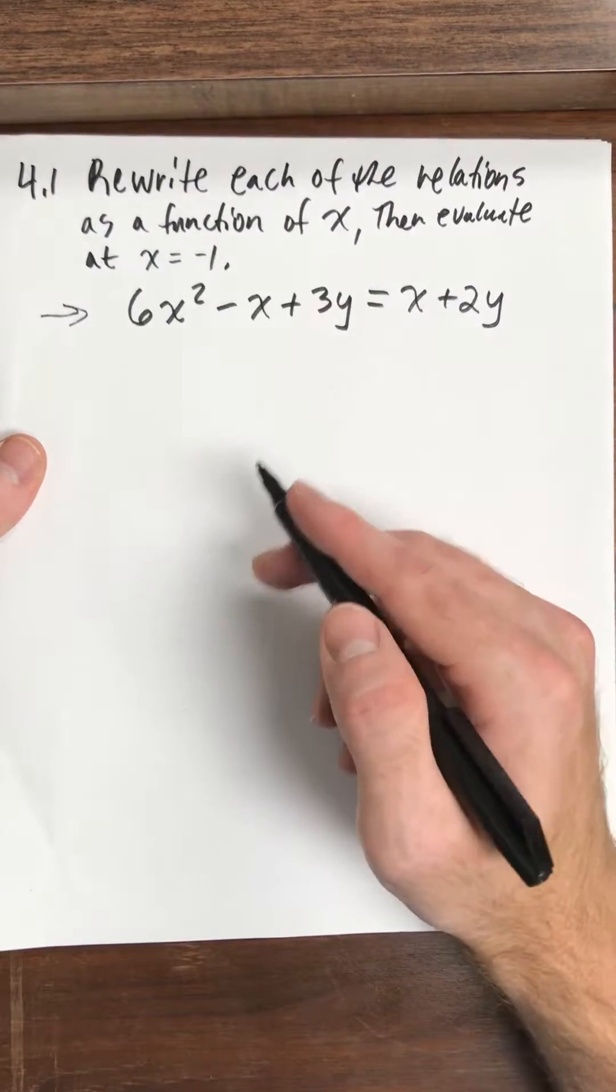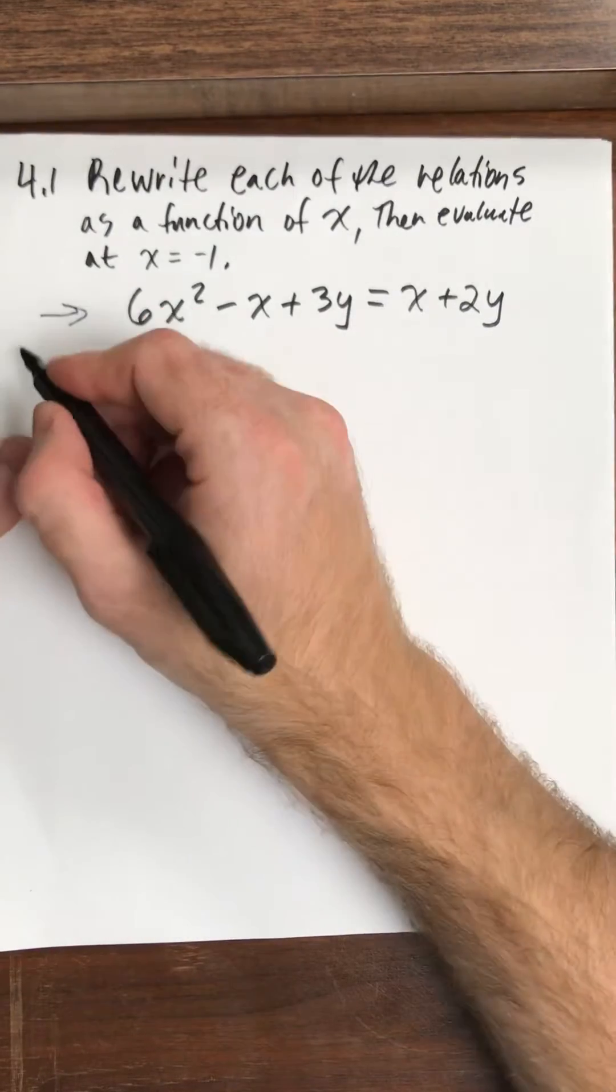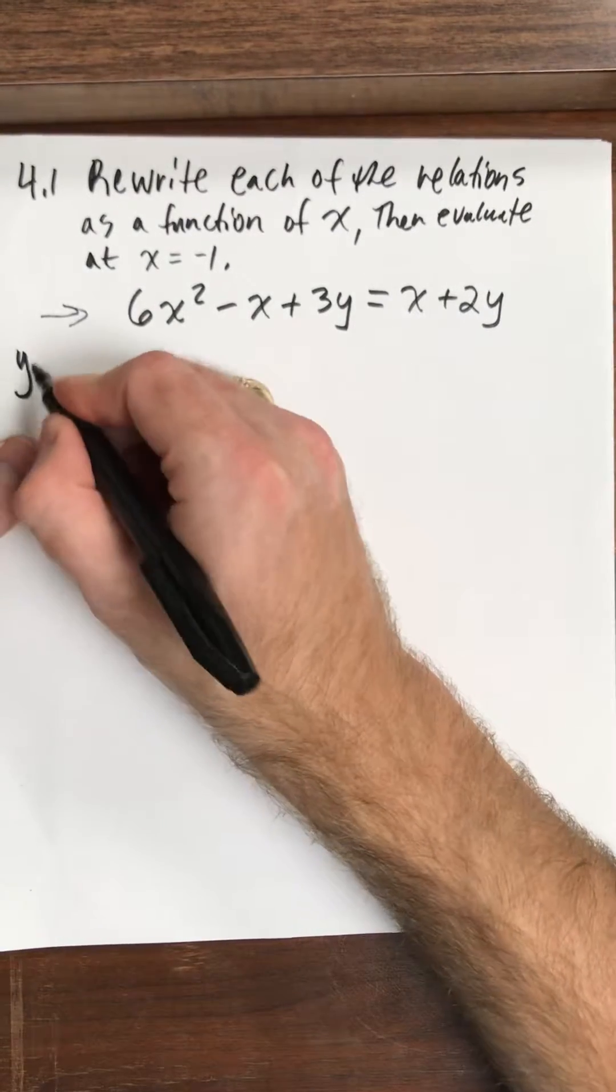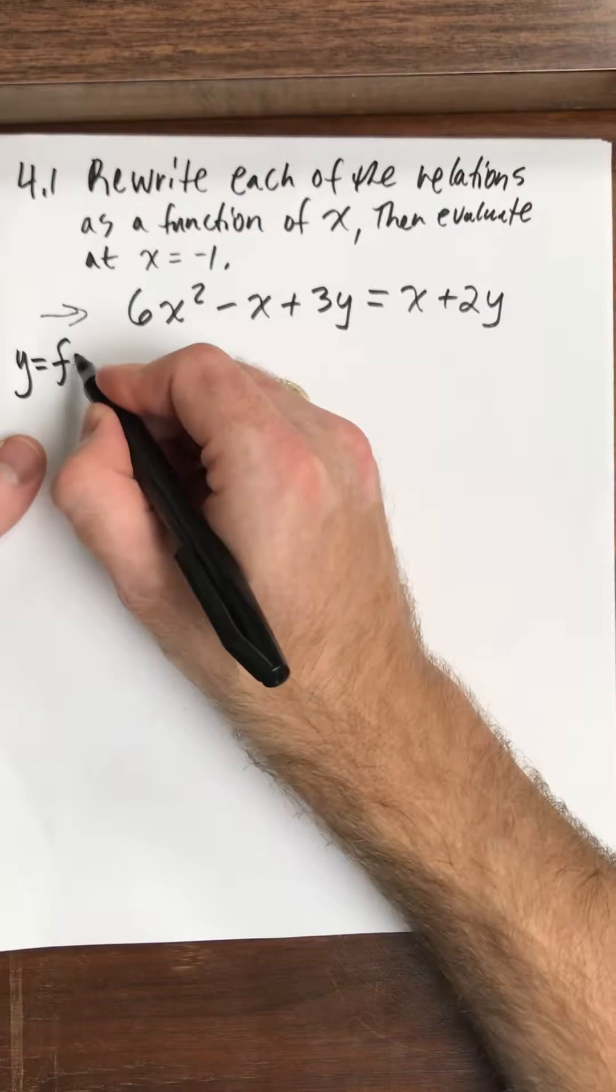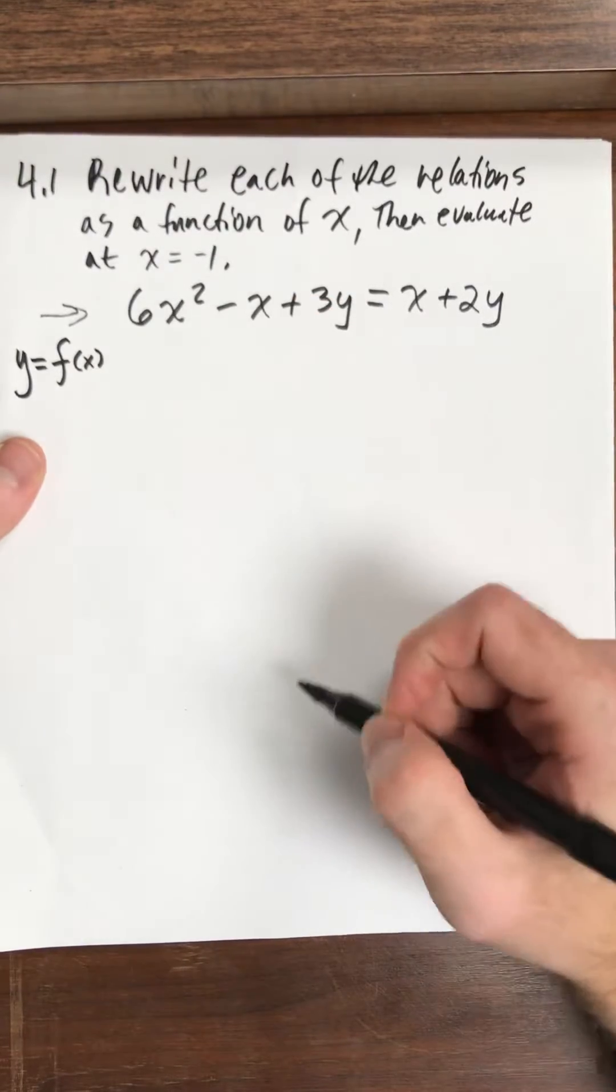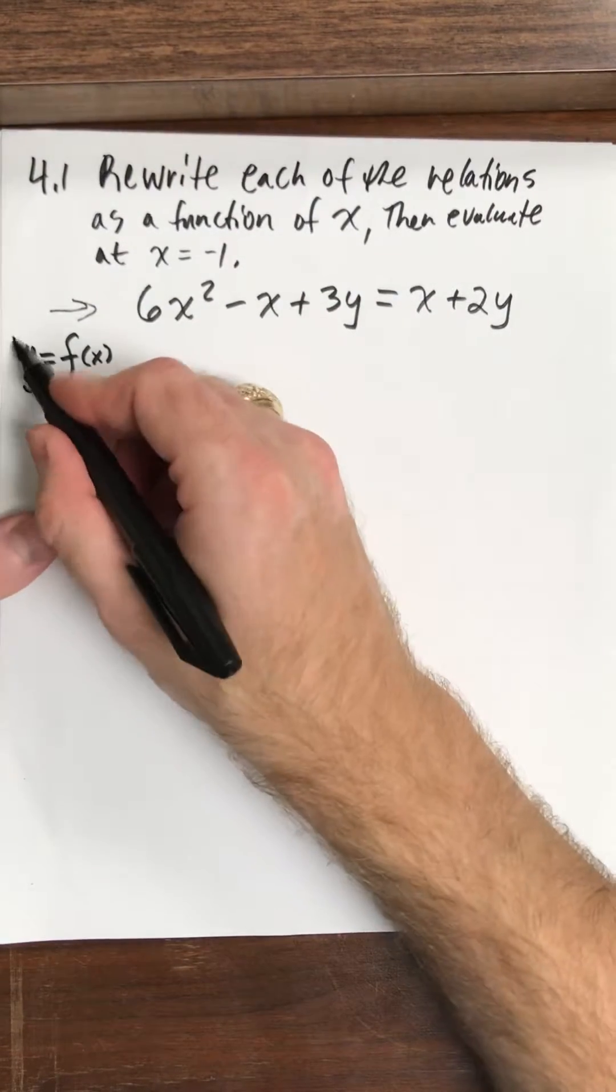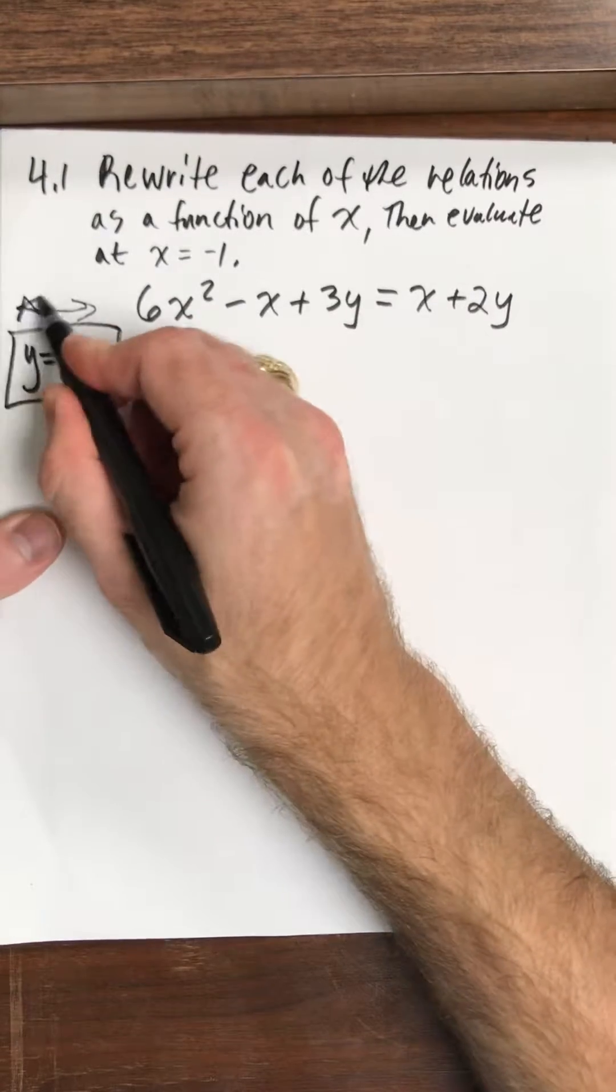So what I want you to remember for this section and for the rest of the course, anytime I see y my brain should be thinking this is f of x. Okay, so y equals f of x. This is key here.